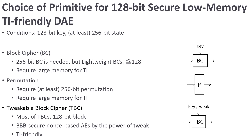The last primitive is tweakable block cipher (TBC). A tweakable block cipher is an extension of block cipher where an additional input called a tweak is introduced, offering distinct permutations by changing the tweak. Tweakable block ciphers have been designed to have at least 128-bit blocks, and the tweak contributes to designing beyond-birthday-bound secure nonce-based AE. Moreover, TBCs offer TI-friendly modes such as PFB and PFB Plus because the block size is small and tweak and key are processed by linear operations. From these features, we choose TBCs as the primitive of our DAE.